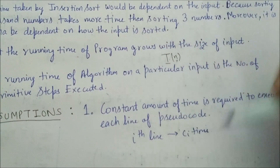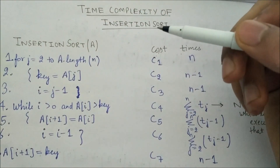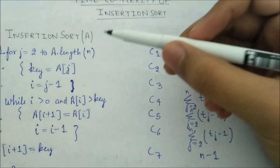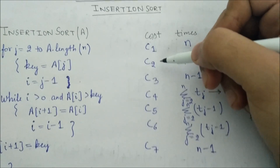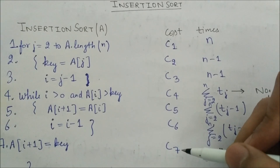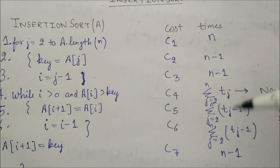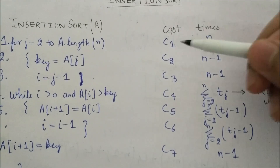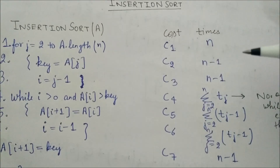The i-th line of the pseudocode takes ci time to execute. Looking at the pseudocode for insertion sort, line 1 takes c1, line 2 takes c2, line 7 takes c7, and so on. We count how many times each line is executed, then multiply that count by the cost ci and sum them all up to get the total number of steps.